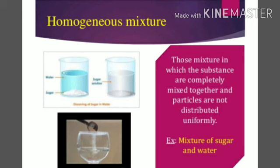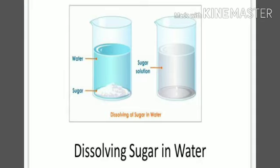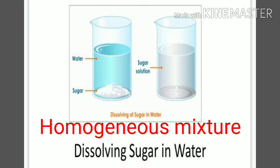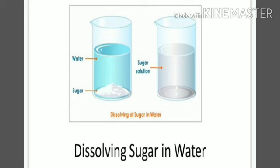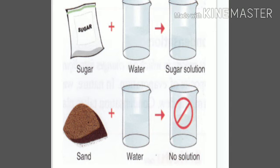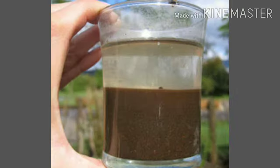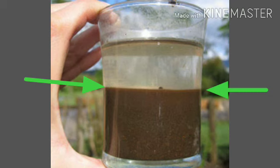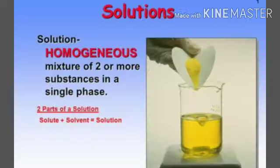In a homogeneous mixture, all components are uniformly mixed and we cannot see a boundary. A good example is sugar dissolved in water — we cannot see any boundary between solute and solvent, and we cannot see the solute particles. The opposite is a heterogeneous mixture, in which components are not thoroughly mixed and we can see a boundary. An example is sand and water — we can see the sand particles and a clear boundary between water and sand.